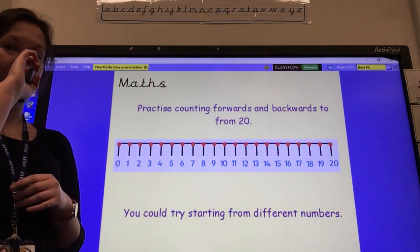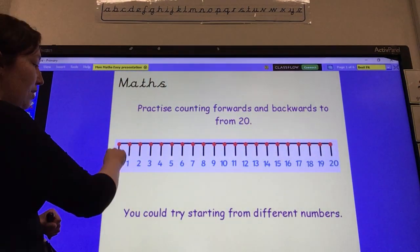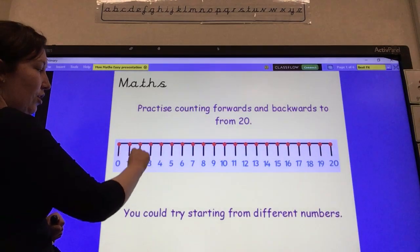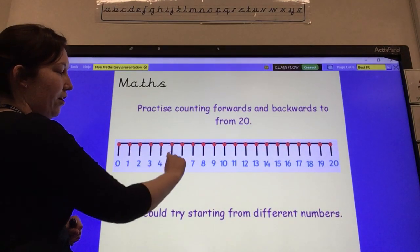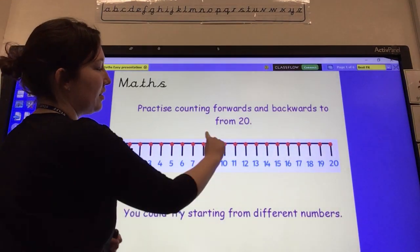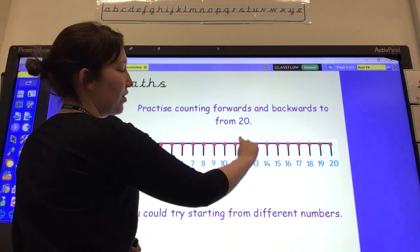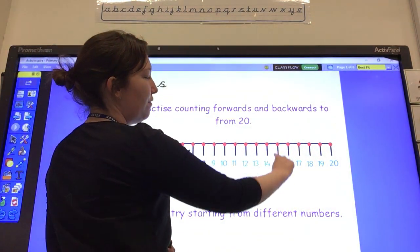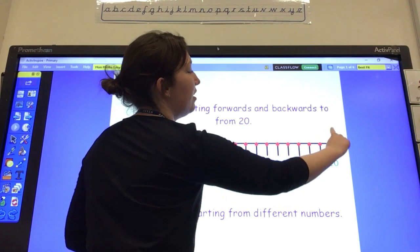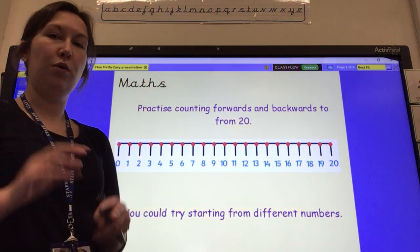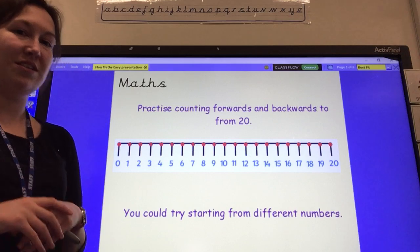Starting from 0, can you count along with me up to 20? 0, 1, 2, 3, 4, 5, 6, 7, 8, 9, 10, 11, 12, 13, 14, 15, 16, 17, 18, 19, 20. Now pause the video and have a go at doing that yourself.